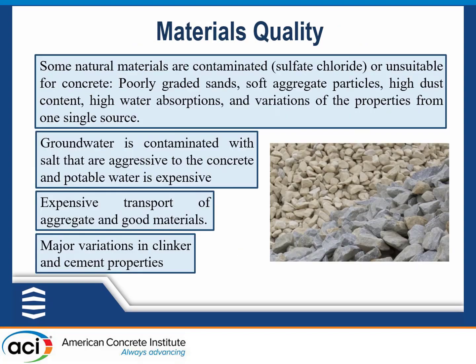The second consideration is material quality. There are several constraints on materials available in the Middle East. First, some materials are poorly graded. The high rate of evaporation has contaminated several materials with chloride and sulfate. Transportation costs are excessive because good-quality materials are restricted to small areas. There is also major clinker variation in the cement industry — in one airport project, several types of clinker and cement produced varying initial setting times, restricting use to a single source of cement.